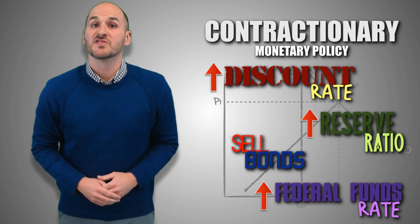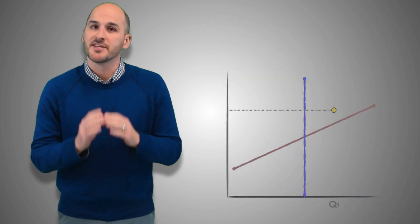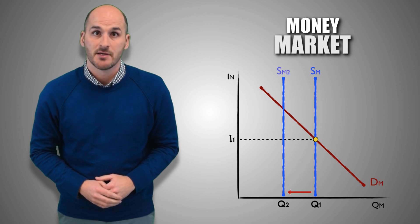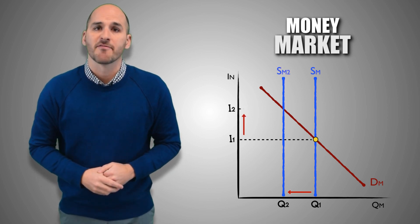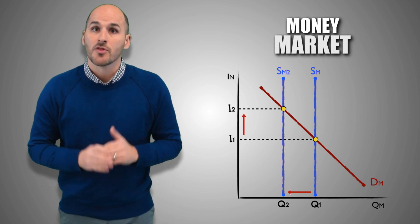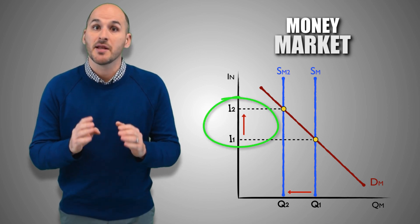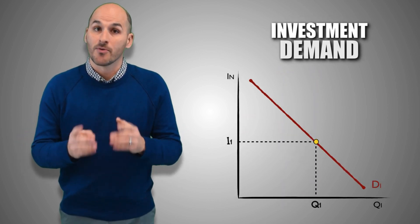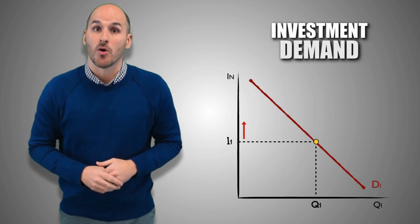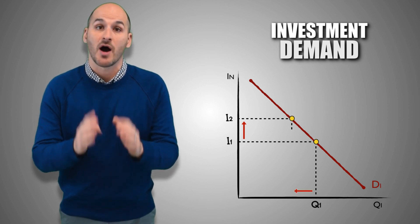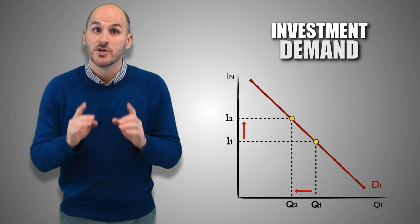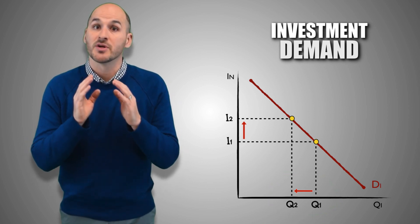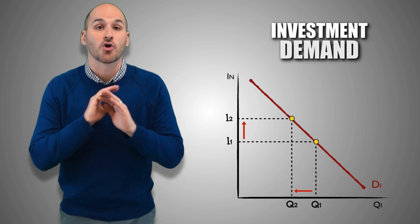When the Federal Reserve uses any of these four tight monetary policy options, it decreases bank reserves and loanable funds, which decreases the money supply in the economy. Because there's a lesser supply of money available in the money market, the nominal interest rate in the money market increases, meaning loans are now more expensive for firms. As the nominal interest rate rises, firms are either less willing or less able to borrow money, because it is more expensive now that interest rates are higher. As a result, firms take out a lesser quantity of loans and reinvest less in themselves, leading to a decrease in investment spending by firms across the economy.